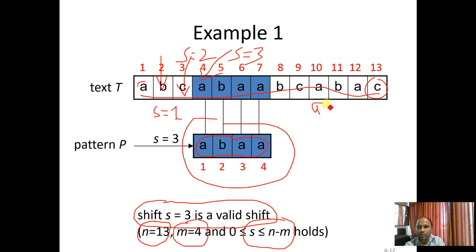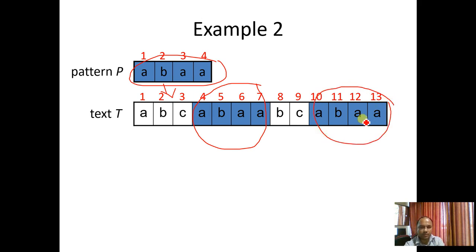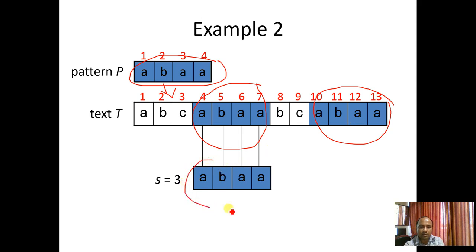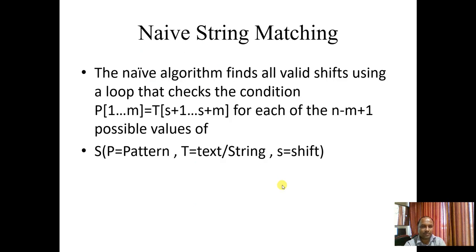Here is another example where we are trying to find the pattern ABAA and we have multiple occurrences. Here we are able to find one pattern, and at another position we find another pattern. At shift equal to 3 we get the first pattern, and at shift equal to 9 we get another pattern. So we have to find all possible patterns in a given text. The Naive string matching algorithm finds all valid shifts using a loop that checks the condition.